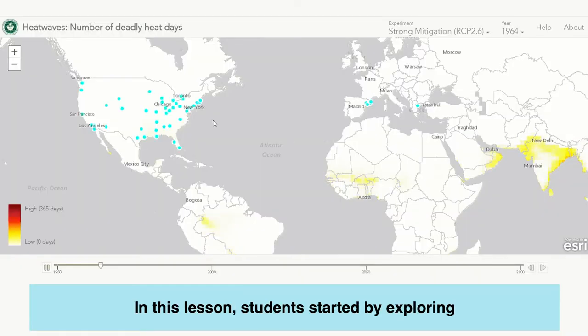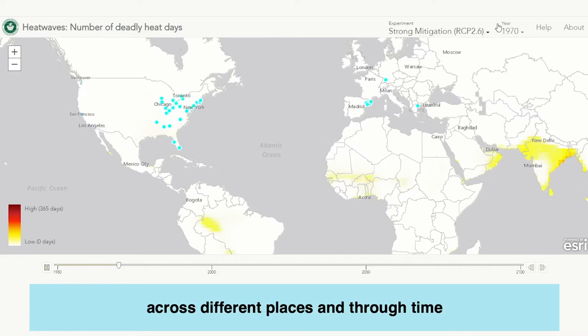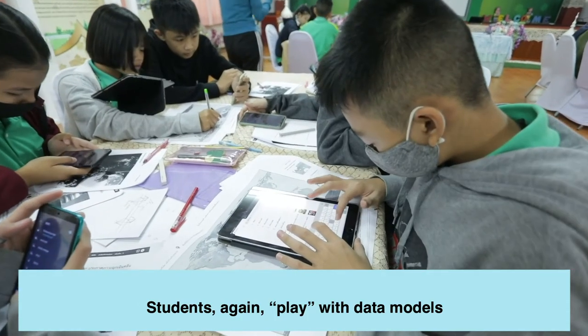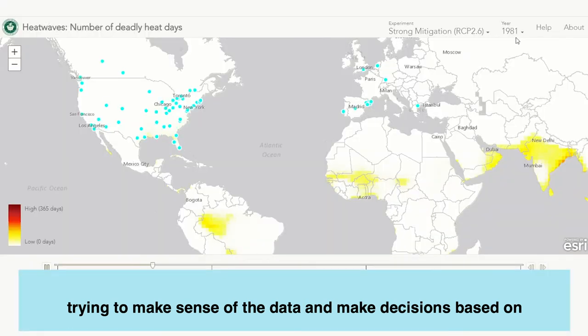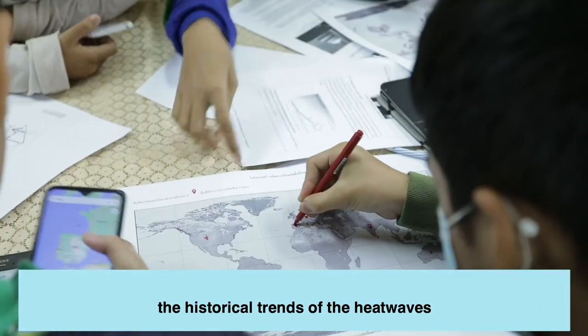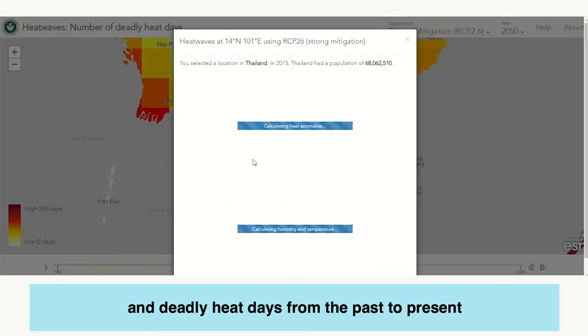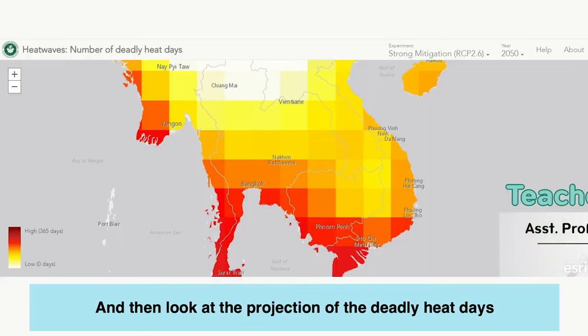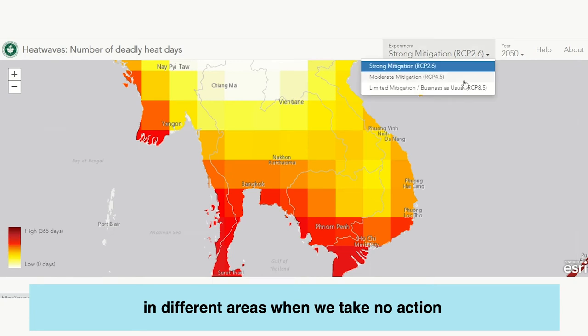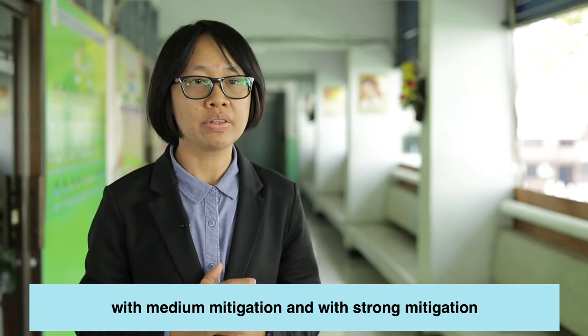In Heat Wave X-ProBot, we design several computational thinking integration points. Students start by exploring the occurrence of heat waves across different places and through time, from the past to the future. Students play with data models, trying to make sense of the data and make decisions based on projections. We ask students to look at historical trends of heat waves and deadly heat days from past to present, then look at projections of deadly heat days in different areas when we take no action, with medium mitigation, and with strong mitigation.